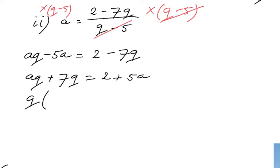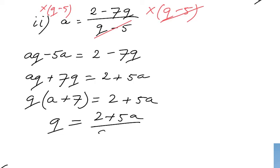Get that common factor out which is Q. Q times A plus 7 equals 2 plus 5A. And then you divide both sides by A plus 7 in this case. Q equals 2 plus 5A over A plus 7.